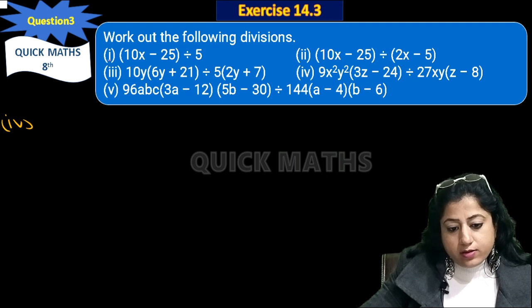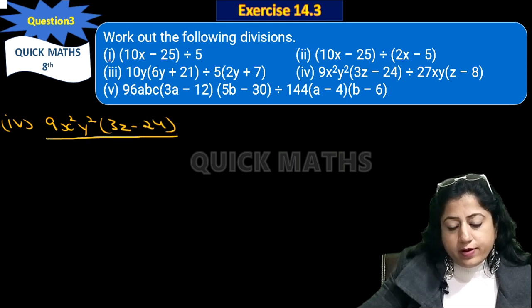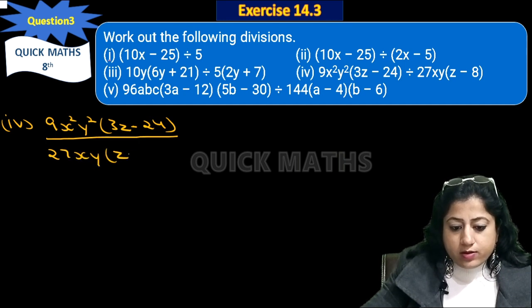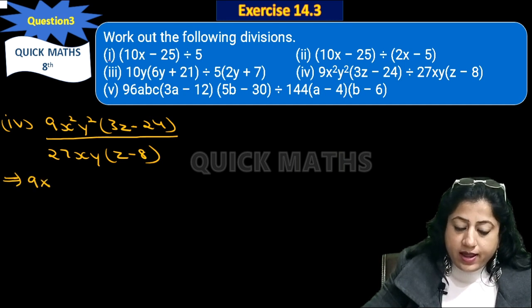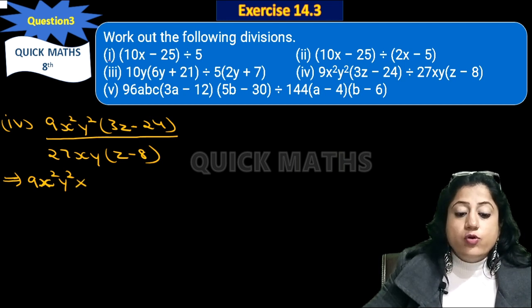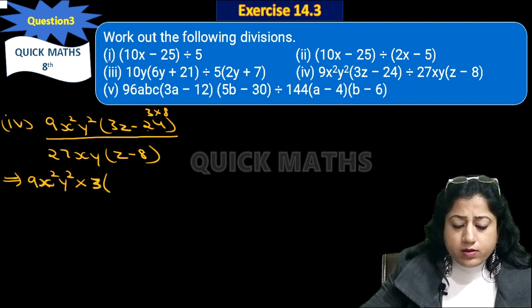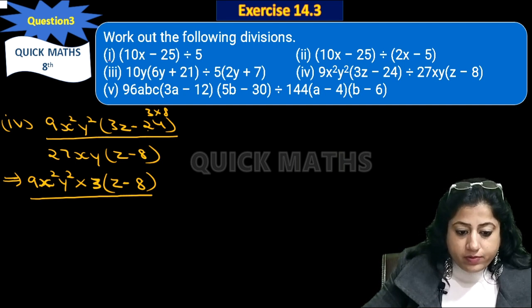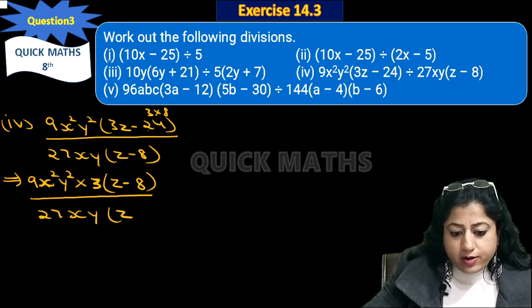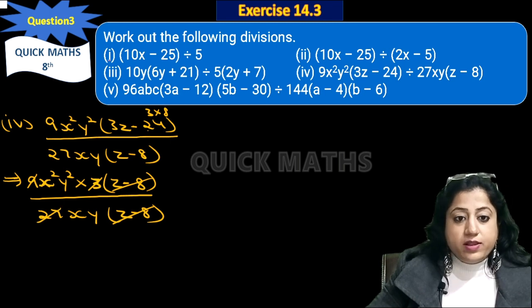The fourth part is 9x²y²(3z - 24) divided by 27xyz(minus 8). First, we try to cancel within the bracket. From the numerator bracket, 3 is common since 24 = 3×8, giving us 3(z - 8). The denominator also has (z - 8), so those binomials cancel. Now we have 9x²y² × 3 over 27xy, which simplifies since 9×3 = 27, cancelling with 27.